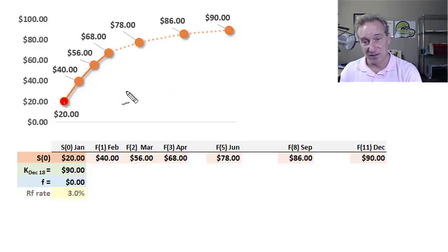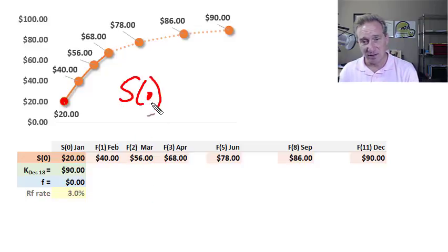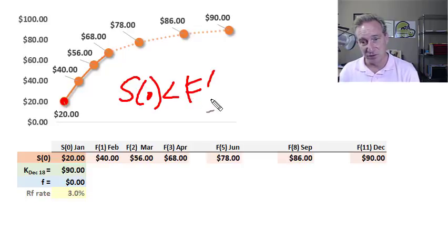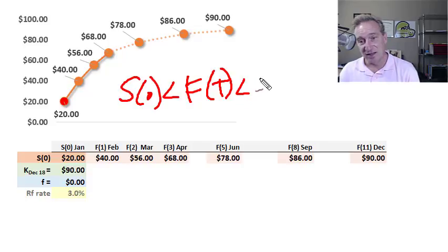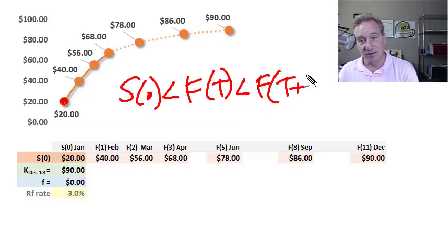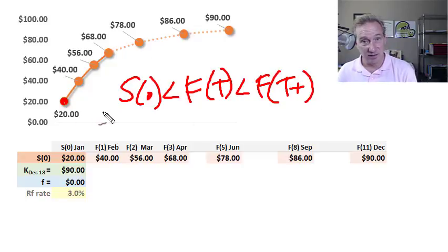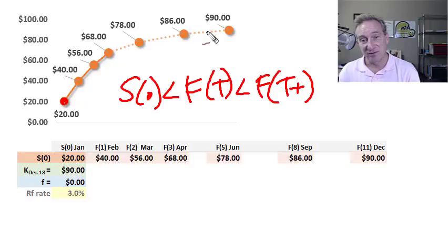The definition of contango is that the spot price — in this case $20 — is less than the price of the near-term futures contracts, which are in turn less than the price of the more distant futures contracts. So contango, put simply, is futures prices that are increasing with maturity.